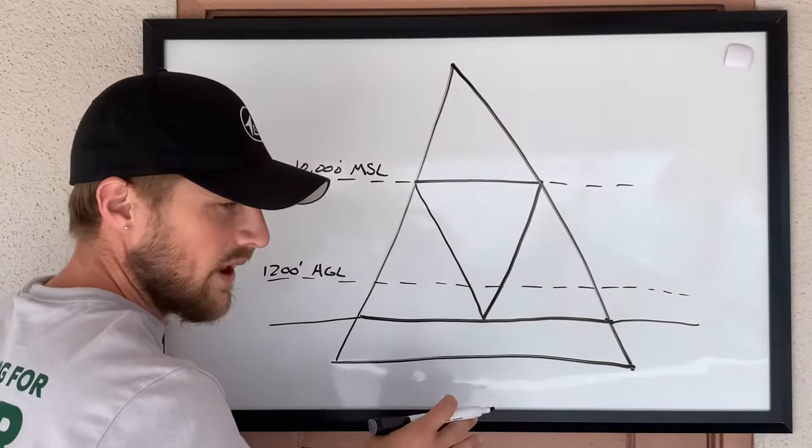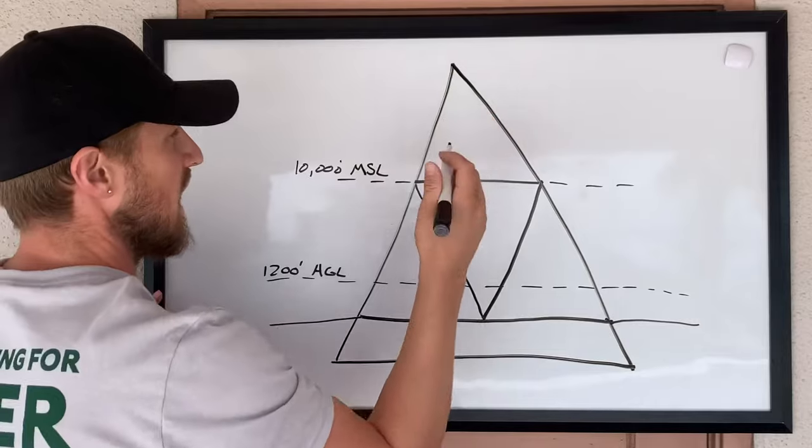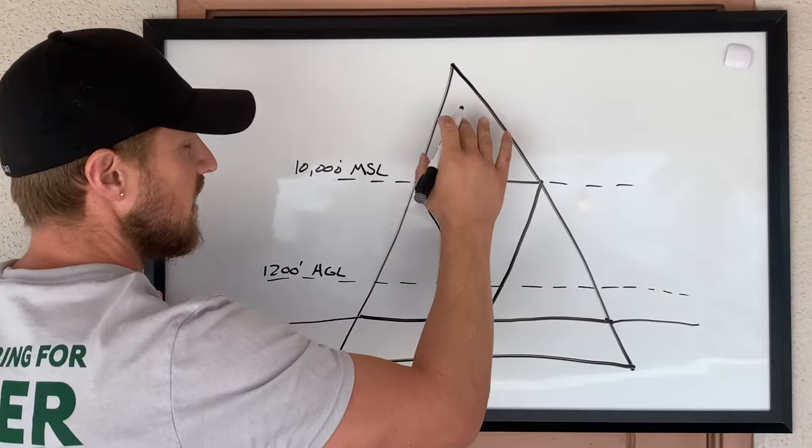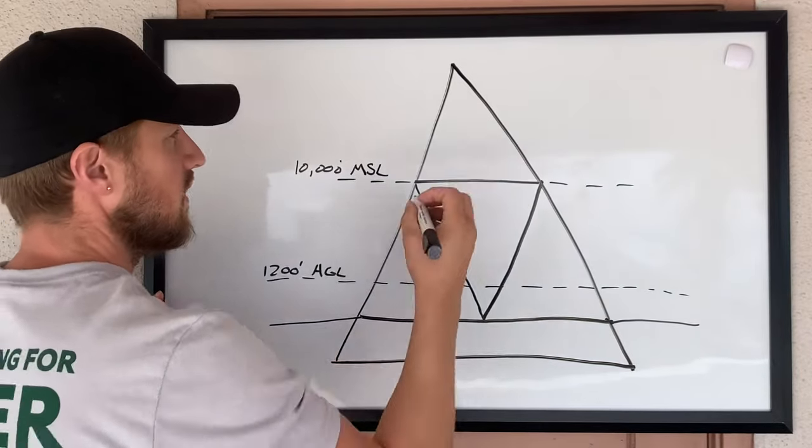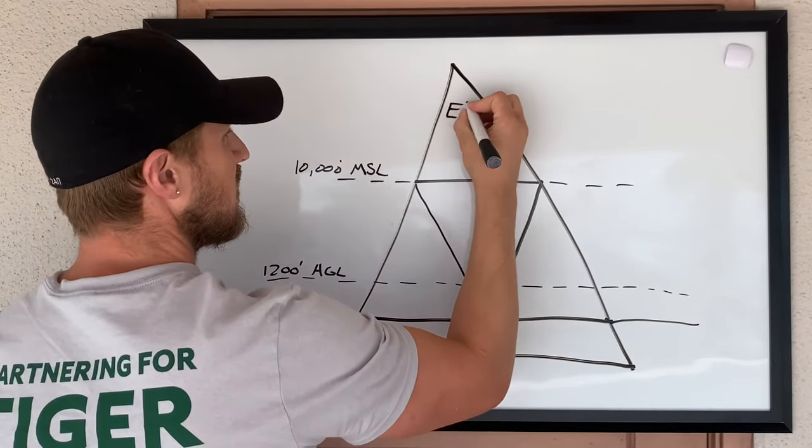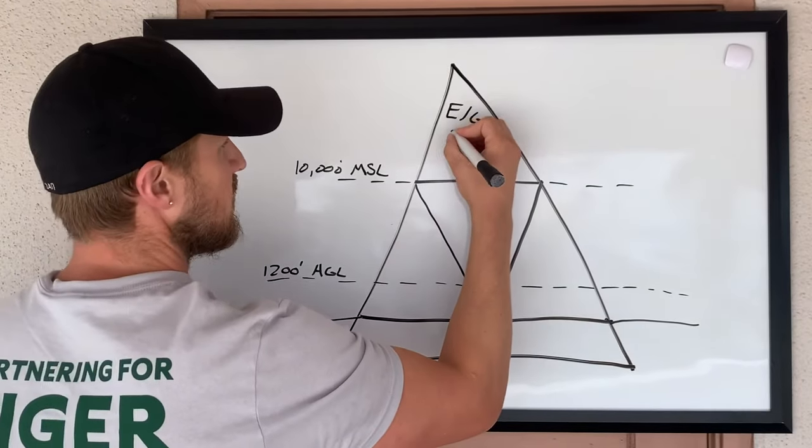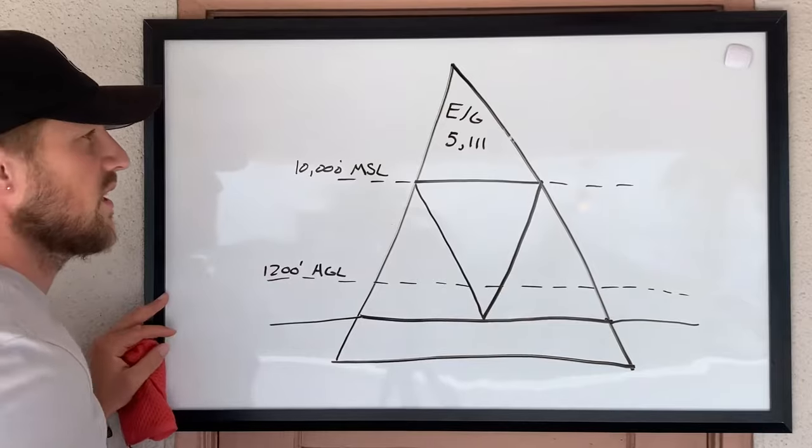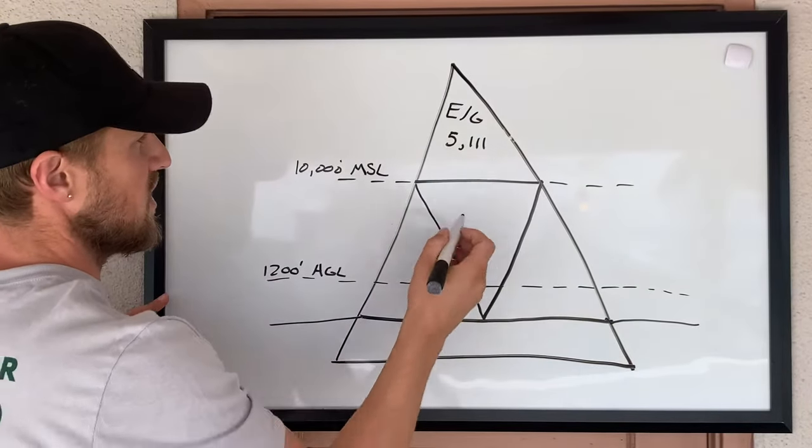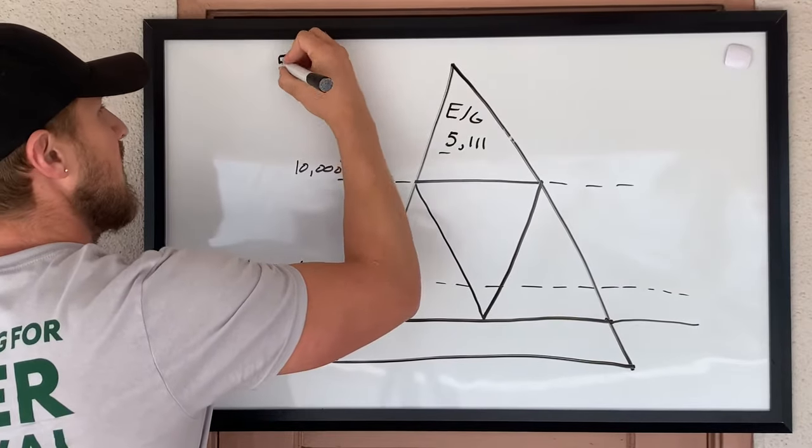Next what we're going to do is draw the actual names and then say the visibility and cloud clearance requirements. Up here you have Class Echo and Golf, and this is 5-1-1-1. We're going to use this abbreviation to help with our memorization. The first number is visibility, so that's five statute miles visibility.